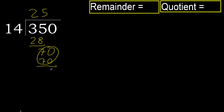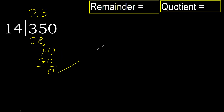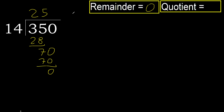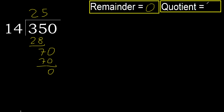Subtract — 0. Next: that is not a number, therefore finish it. 350 divided by 14 is here.